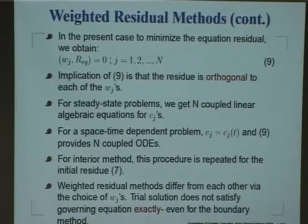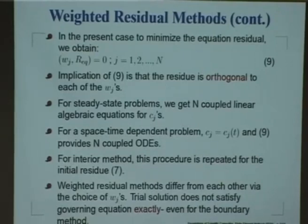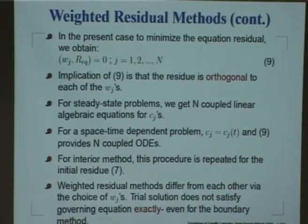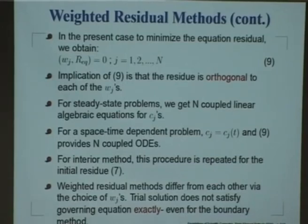So, we will basically reduce this equation residue with respect to each and every one of these weight functions w_j. Whenever you have such a norm equal to 0, that means the weights w_j's are orthogonal to the solution residue — that is the mathematical definition of orthogonality. If two functions are not correlated, the integral of the whole thing should be equal to 0. Here also we are trying to say that the residue of the equation should be orthogonal to some particular choice of w_j's.